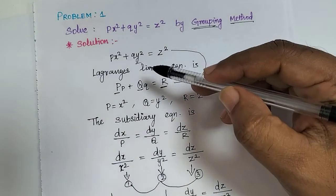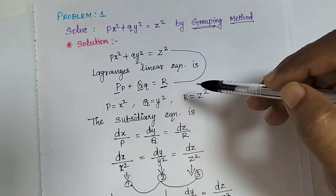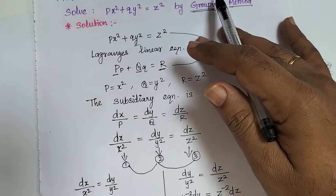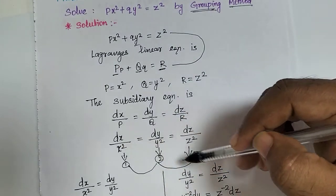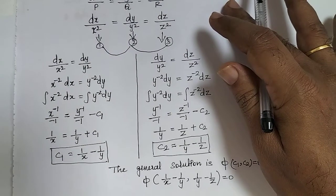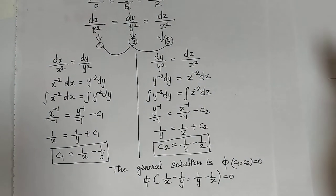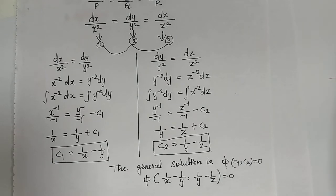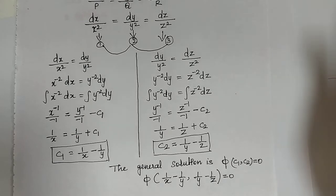To summarize the grouping method: compare the given problem to the general equation to identify capital P, Q, R. Substitute those values into the subsidiary equation, then group pairs — take 1 and 2, or 2 and 3 — integrate, and get c1 and c2. In the multiplier method you can also apply grouping to find one of the values, either c1 or c2.